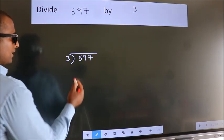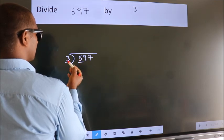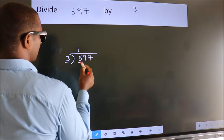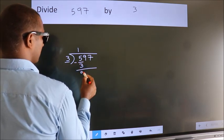Next. Here we have 5, here 3. A number close to 5 in 3 table is 3 once 3. Now, we should subtract. We get 2.